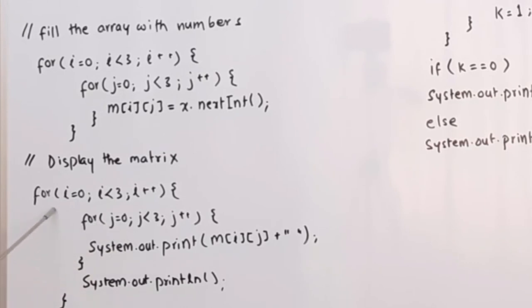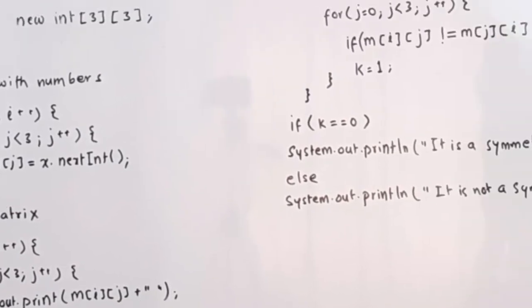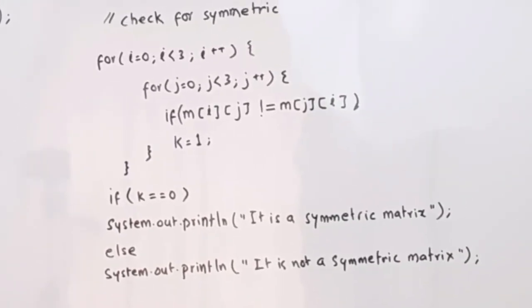Once the numbers are entered, we can display the matrix using the same nested for loop: System.out.print(m[i][j] + space). Once you display the numbers in a matrix form, then we will check whether the matrix is symmetric or not.